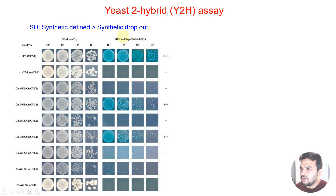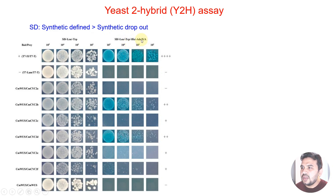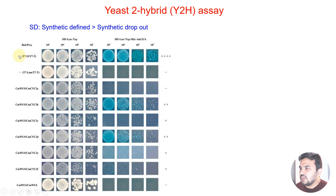In the selective medium, four amino acids are dropped out: leucine, tryptophan, histidine, and adenine — all of them are absent. So this is the non-selective medium and this is the selective medium. We also use a positive control and a negative control.